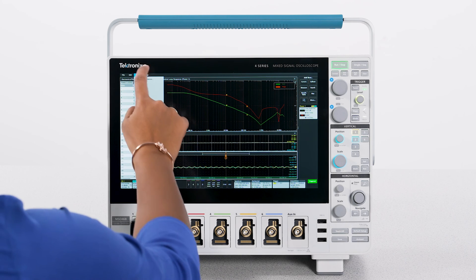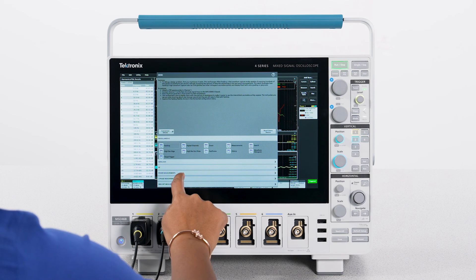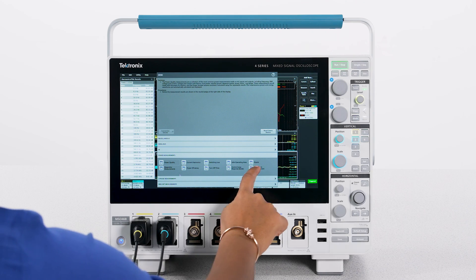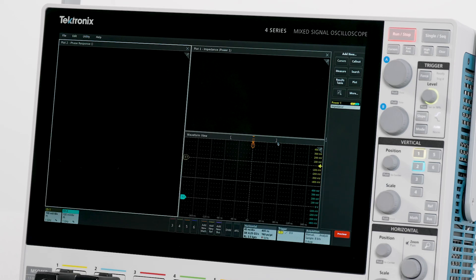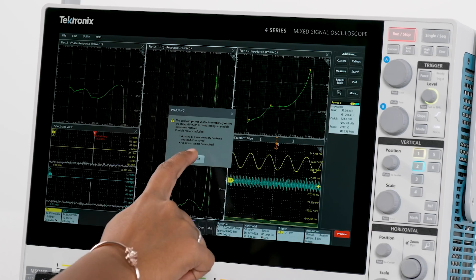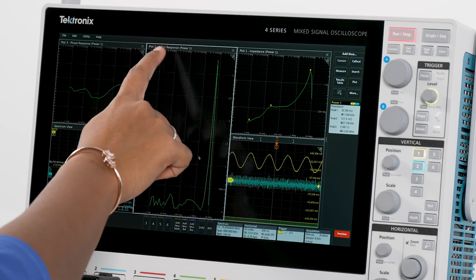Impedance analysis enables two-port impedance measurements of power distribution networks. Using the oscilloscope, you can see the impedance with three peaks, group delay, and phase response.